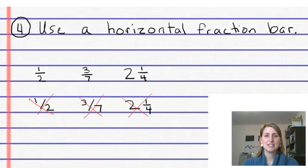The fourth simple habit to get your kids in is to have them use a horizontal fraction bar like we have in these examples. This one-half, three-sevenths, or two and one-fourth. Using the horizontal fraction bar is good for two reasons. It helps kids keep the numerator and the denominator in their correct places and understand what they mean better.